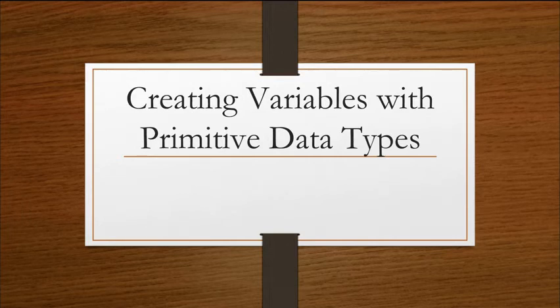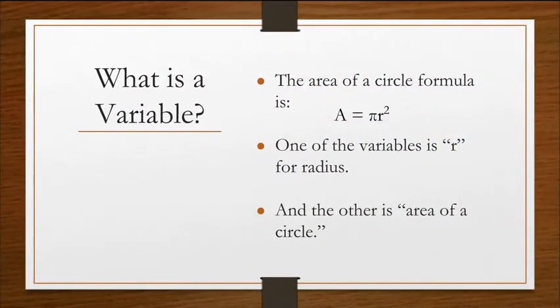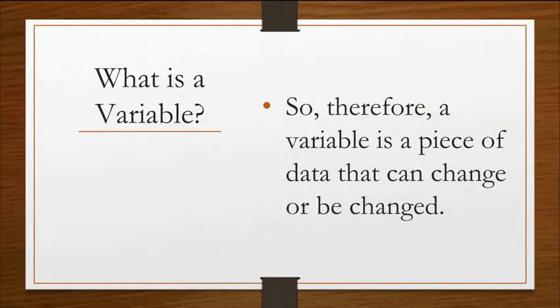Let's look at creating variables with primitive data types. So what is a variable? Well, in this formula for a circle, A equals pi r squared, one of the variables is r, which represents the radius of the circle, and the other is the area. The capital A represents the area of the circle. So this is how we would use it in math class. We can see that a variable is a piece of data that can change or be changed.